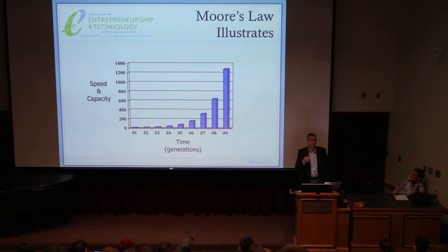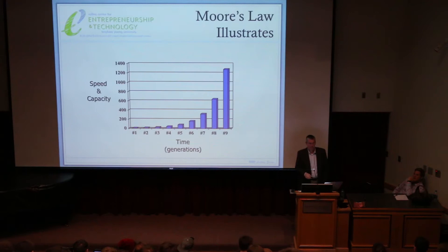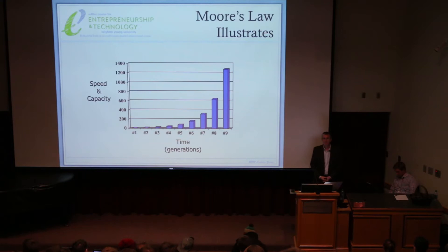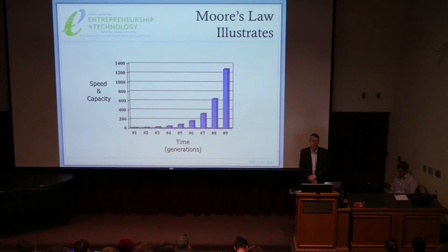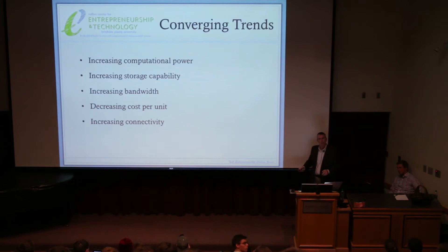Think back to when Gordon Moore observed this. This was 1965, which means I'm turning fifty this year. I have experienced in my lifetime twenty-five doublings. What's two to the twenty-fifth? Thirty-three and a half million. In my lifetime, computers have gotten thirty-three and a half million times faster. Now, that's kind of cool.